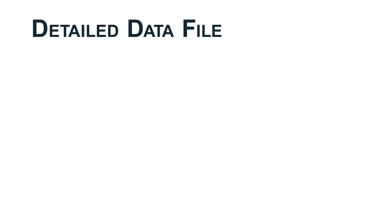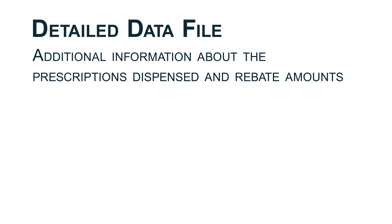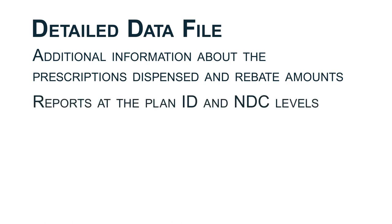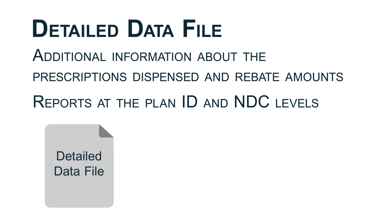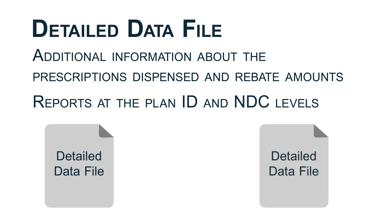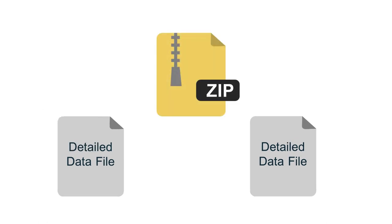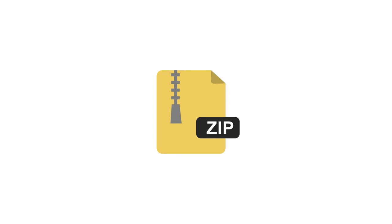The detailed data file supports the issuer-level aggregate data with additional details about the prescriptions dispensed and the rebate amounts at the Plan ID and National Drug Code levels. Each detailed data file must be a pipe-delimited CSV file, and multiple CSV files may be required if the total number of Plan ID and NDC combinations exceeds a million records. When submitting this data in HIOS, the submission must consist of a zip file containing one or more CSV files for the same issuer.